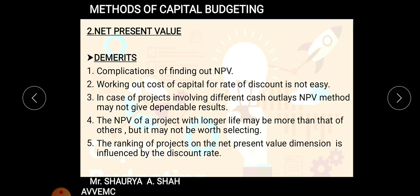Second demerit: working out the cost of capital as the rate of discount is not easy. In case of projects involving different cash outlays, NPV may not give dependable results. Some projects may have an economic life of five years, others ten years, with different cash outlays. Many projects give no return for the first two to three years but much higher return after that — making comparison difficult.